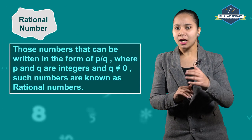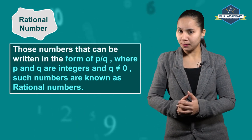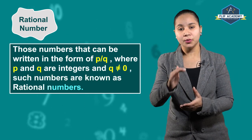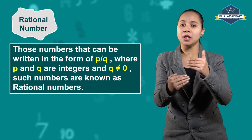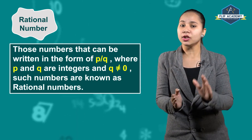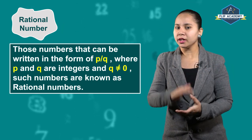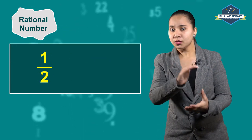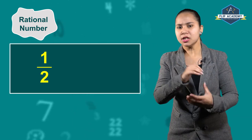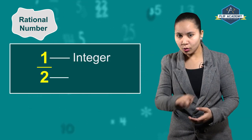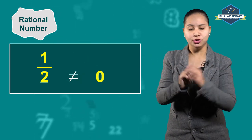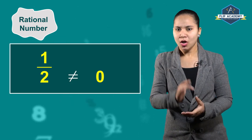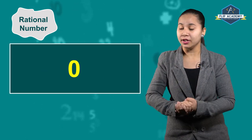Come back to rational numbers. What are rational numbers? Rational numbers are those numbers that can be written in the form of p/q, where p and q are integers and q does not equal 0. Such numbers are called rational numbers. For example, 1/2 is a rational number because 1 is an integer, 2 is an integer, and 2 does not equal 0. That is why 1/2 is a rational number. Also, 0 is a rational number.